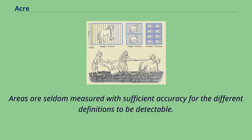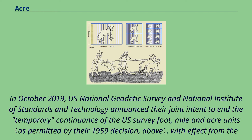In October 2019, the U.S. National Geodetic Survey and National Institute of Standards and Technology announced their joint intent to end the temporary continuance of the U.S. survey foot, mile and acre units, with effect from the end of 2022.